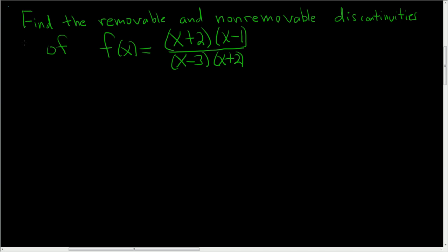We have to find the removable and non-removable discontinuities of this rational function. The first thing you want to do is try to simplify. It looks like x plus 2 cancels, so we end up with x minus 1 over x minus 3.